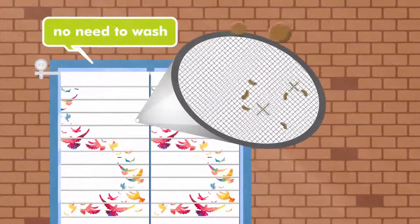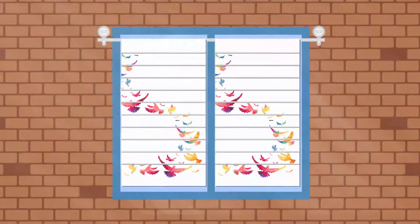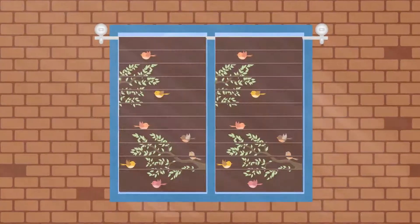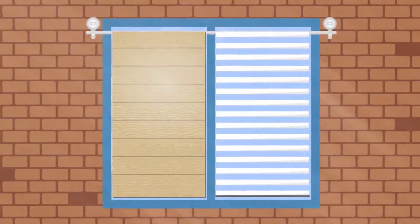The solar curtain has dirt repellent textiles with many colors and pattern options. It's in roman blind and zebra shade models.